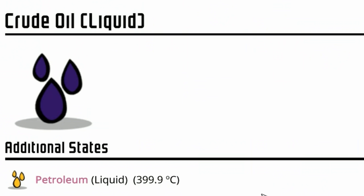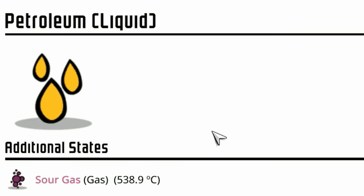So how does a petroleum boiler work? In its simplest form, liquid crude oil turns into petroleum at 399.9 degrees — that's all you have to do. Heat crude oil enough and it turns into petroleum. The key is you don't want to heat it past that, because petroleum will turn into sour gas at 538.9 degrees. That gives you about 138 degrees of play room before hitting sour gas.